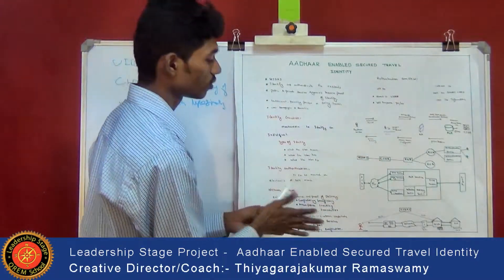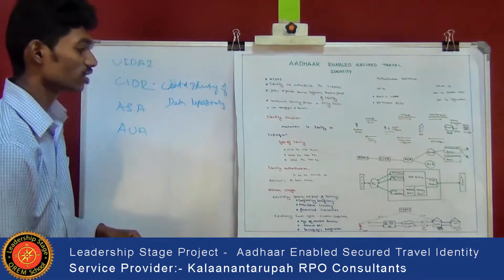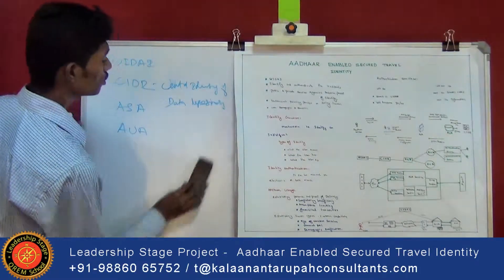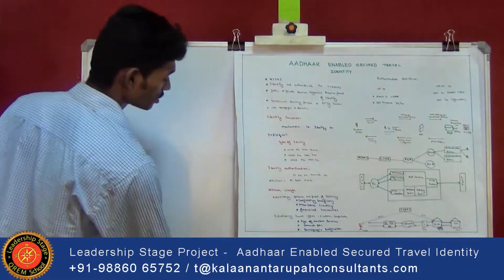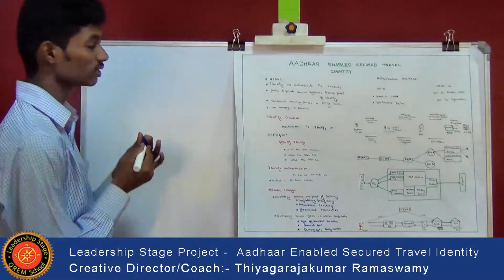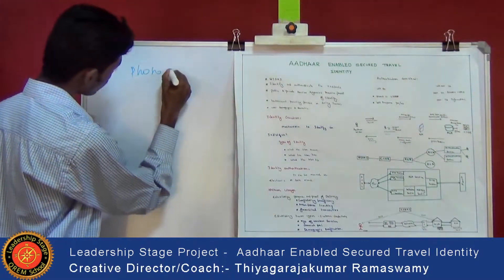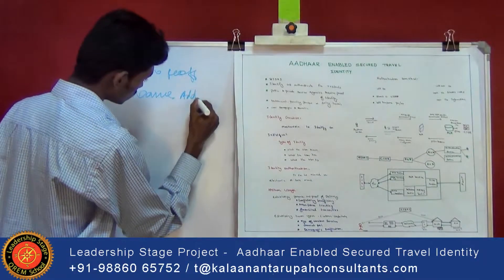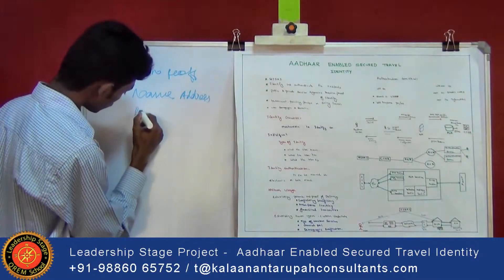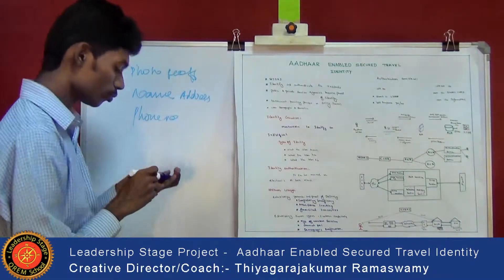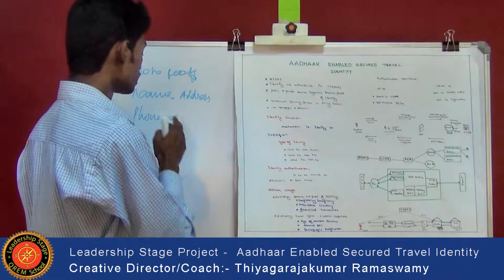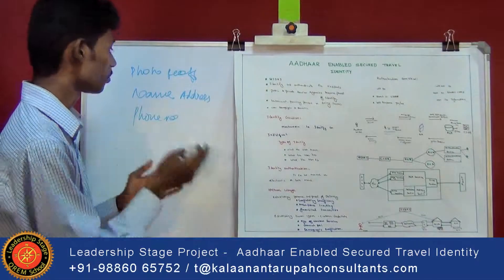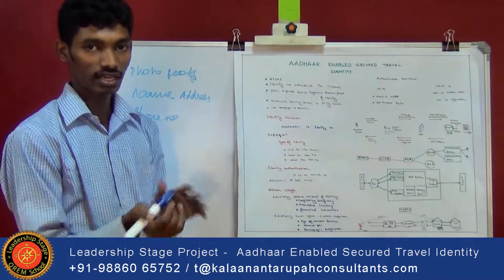CIDR — Central Identity Data Repository — is the database which stores information about the Aadhaar holder, such as photo, name, address, phone number, and other personal identification information. By using that stored information, we authenticate the user.